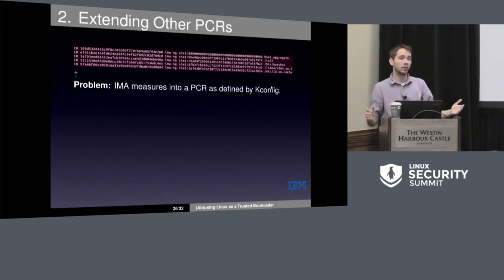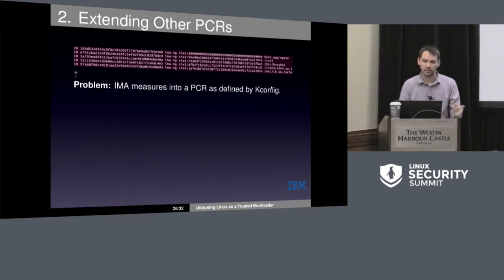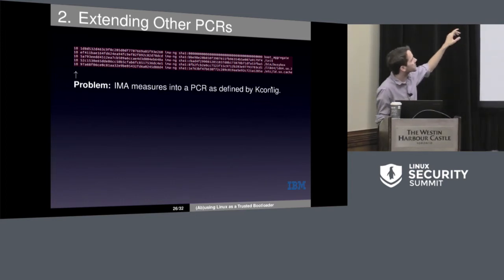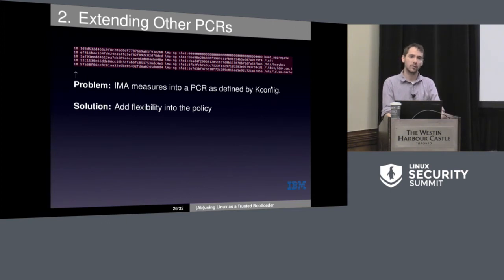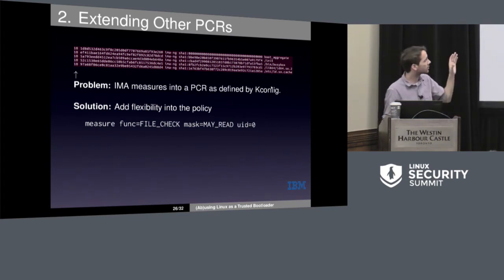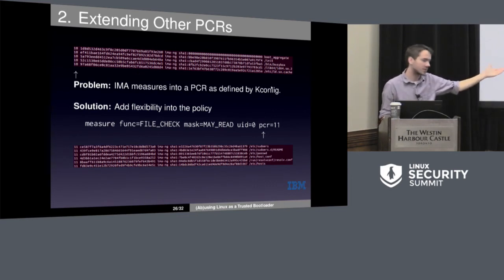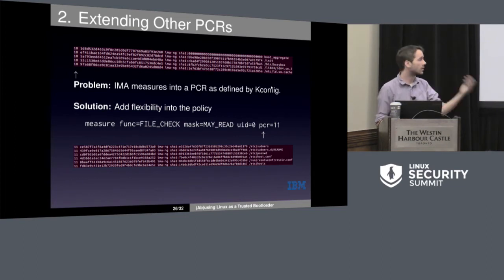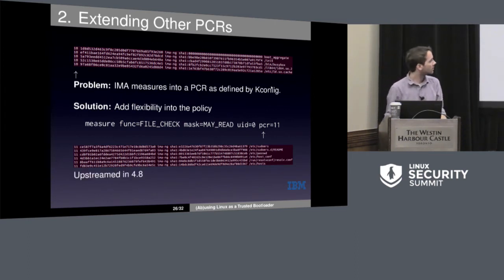The next issue is extending other PCRs. In a bootloader, maybe we want to measure into PCR 4 and 5, not PCR 10 like the default configuration. The solution is just to add flexibility into the policy — rather than having some kind of strange kconfig option, just add it into the policy. So take the example policy and stick on a PCR equals at the end. Now the left value says 11 rather than 10, and if you check your PCRs, you'd see that 11 is now being measured with whatever the policy was set to do. This was upstreamed in 4.8 — and I'll give myself a shout-out, it was my first patch. Thank you, Mimi, for working with me on that.